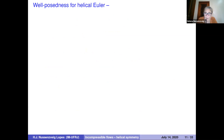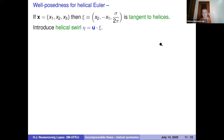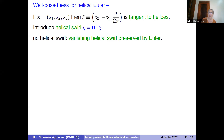The situation for Euler is more complicated. We get global existence only for so-called no-helical-swirl flows. In analogy with the axisymmetric swirl component, the helical swirl is the component of velocity tangent to the helices, u dot xi. No-helical swirl means u dot xi equals zero. This is preserved by the Euler equation: if you start with zero helical swirl, you remain zero helical swirl.